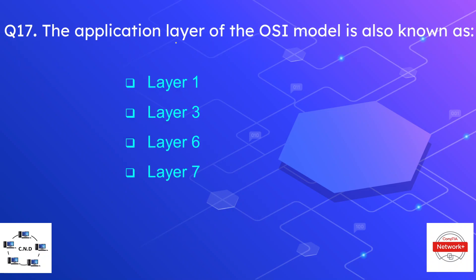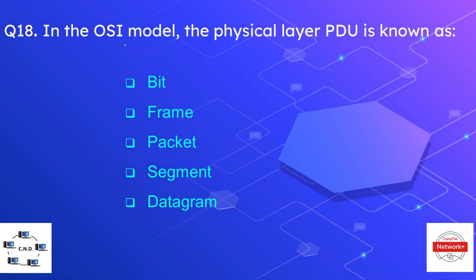Question number seventeen is: the application layer of the OSI model is known as which layer? The answer is layer seven. Question number eighteen is: in the OSI model, the physical layer PDU is known as — bit, frame, packet, segment, or datagram? The correct answer is bit. The data unit at the physical layer, or layer one, is known as the bit.